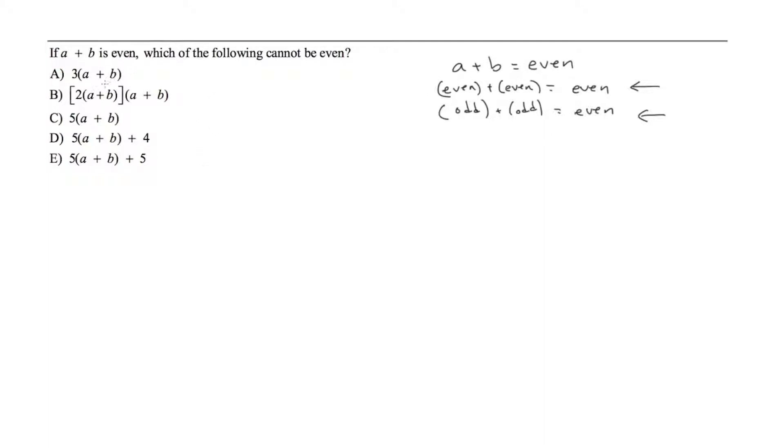So let's plug that in here. We have 3 times some number. Again we can plug in what we want. So I'm going to go with even and even. I'm going to say A is 2 and B is 4. So this is equal to 3 times 6 which is equal to 18. Since this can equal an even number, A is out since the question is asking which of them cannot or can never be even.